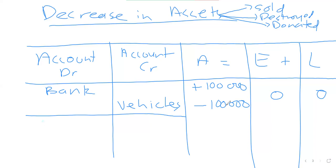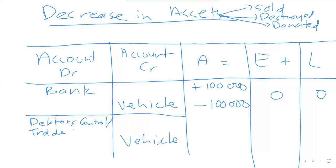Now let's assume the vehicle was not sold for cash but on credit. Vehicles would still be credited because they are reducing — we are selling. But because we are selling on credit, you'll have an account called debtors control — which can also be called trade receivables. We are crediting the debtors control account or opening a debtors control account, which is the same as trade receivables.